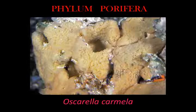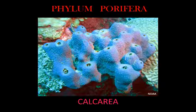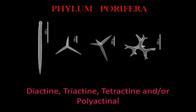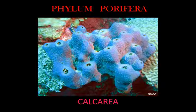Calcarea: Calcareous sponges have a mineral skeleton composed entirely of calcium carbonate, consisting of diactyne, triactyne, tetraactyne, and/or polyactyne spicules, to which can be added a solid basal calcitic skeleton. The aquiferal system ranges in complexity from the most simple asconoid and syconoid to the more complex leuconoid arrangement. Living calcareous sponges are often delicate, forming coalescent tubes or may be unit-shaped.